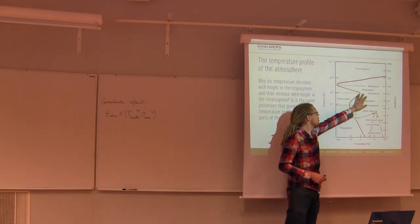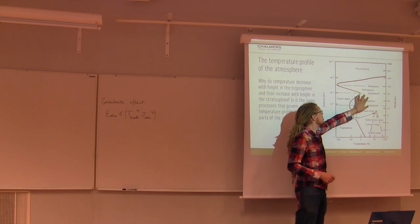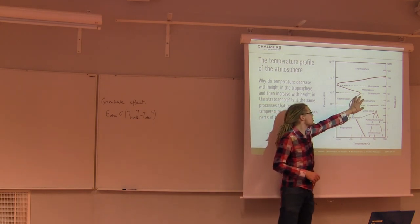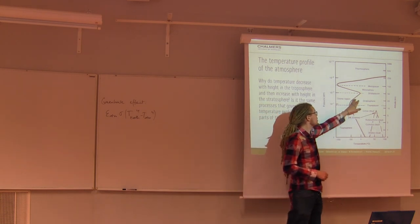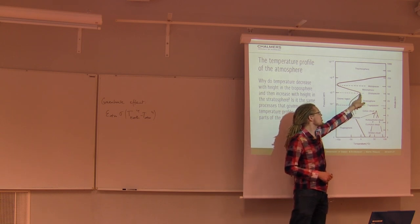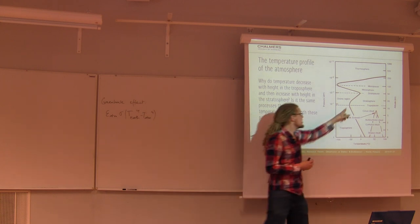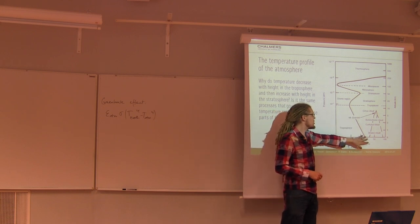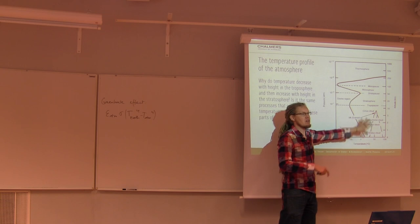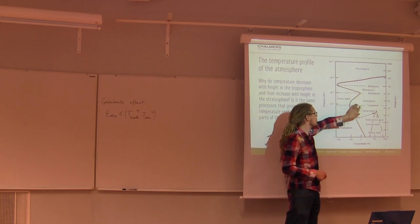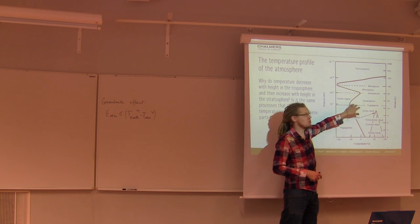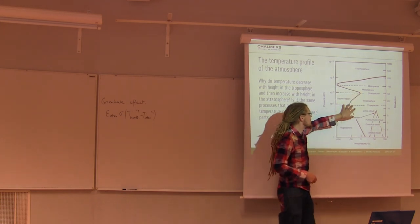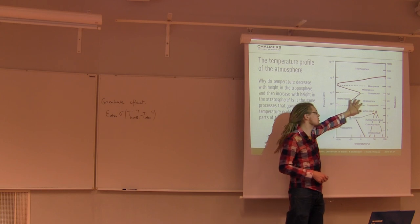In the stratosphere you have a different mechanism: the absorption of really short-wave ultraviolet radiation, especially at the top. That means you have cooler air at the bottom and hotter air at the top, which makes it very stable. The air doesn't move very much up and down, because cooler air won't rise when the air above is warmer. So you don't see cloud formation in the same way in the stratosphere.